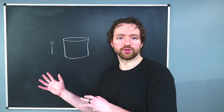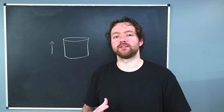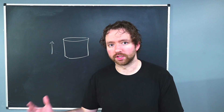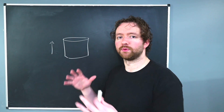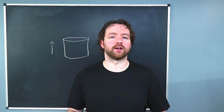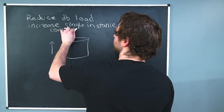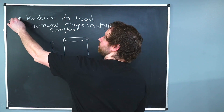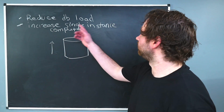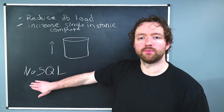A single database instance is adequate for many use cases. Before we have to worry about using multiple instances, there are other things we can do to reduce pressure on the database server. For example, caching — we can cache data in something like Redis — which can reduce the number of requests we have to make to the database. So two key strategies are: reducing the database load with things like Redis caching, and vertically scaling the single database instance.